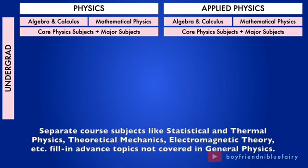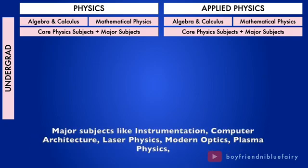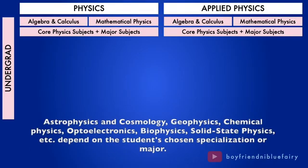Separate core subjects like statistical and thermal physics, theoretical mechanics, electromagnetic theory, etc. fill in advanced topics not covered in general physics. Major subjects like instrumentation, computer architecture, laser physics, modern optics, plasma physics, astrophysics and cosmology, geophysics, chemical physics, optoelectronics, biophysics, solid state physics, etc. depend on the student's chosen specialization or major.